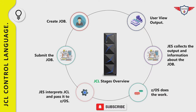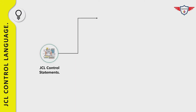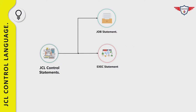Multiple initiators permit the parallel execution of batch jobs. JCL is used to convey information to z/OS through a set of statements, and these statements are called job control statements. There are three kinds of job control statements.